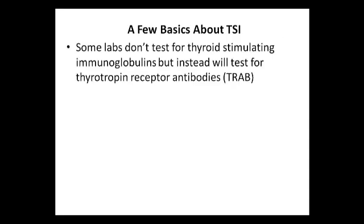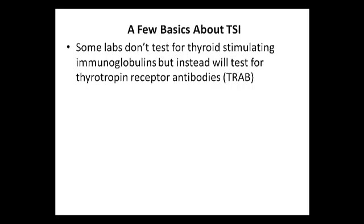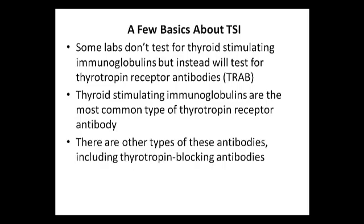Some labs don't test for thyroid-stimulating immunoglobulins, but instead will test for thyrotropin receptor antibodies. Thyroid-stimulating immunoglobulins are the most common type of TSH receptor antibody, with another being the thyrotropin-blocking antibodies. Unlike thyroid-stimulating antibodies, the thyrotropin-blocking antibody blocks the TSH receptor to prevent TSH from binding, and this action essentially causes hypothyroidism.